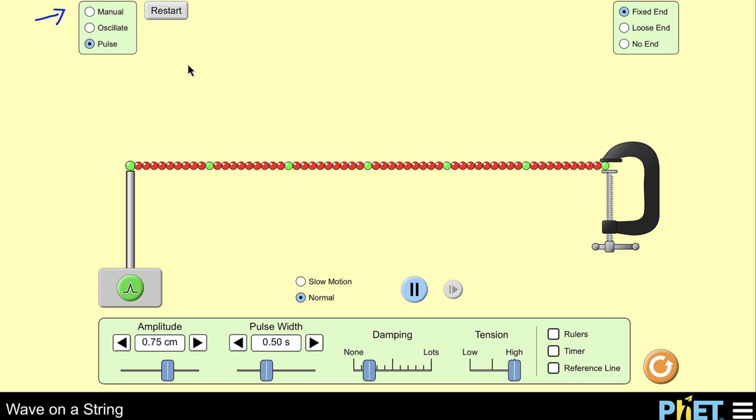Now on the right hand side on the top, you see that you can either have a fixed end where this is clamped down. You can have a loose end where it can move up and down, or it can just go out for infinity and it can just keep going out where there is no end. So you may play with various of these as you go through. Now if you need to pause anything, you can always pause it. You can play it in normal or in slow motion.